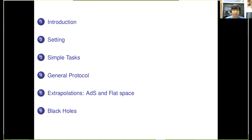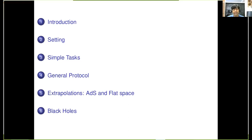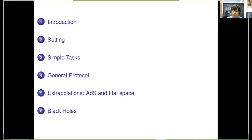Let me give you an outline of the talk. After the introduction, I'll make the setting more precise: I'll explain what the powers of the observers are, what observations they're allowed to make, and what states we are considering. Then I'll give simple examples of how observers near the boundary of AdS can obtain information about the center without physically visiting it. Then I'll explain the more general protocol for completely identifying any low-energy state of quantum fields. Finally, I'll explain how to extrapolate these results to the full theory and draw conclusions about black holes.